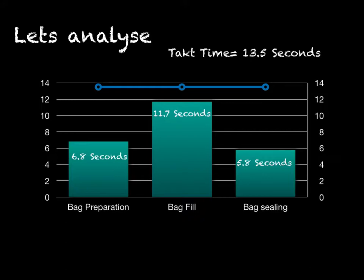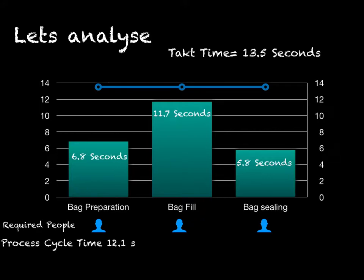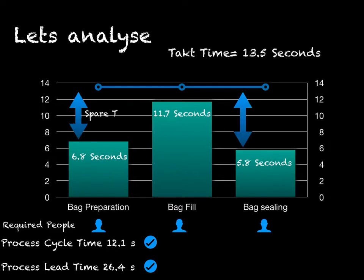Now we can see the number of people required for every process. As we can see, all the cycle times are below the takt time, which means we are going to comply with customer demand. The spare time is shown as a gap between the takt time and each of the bars.